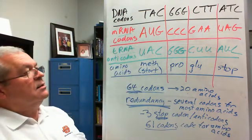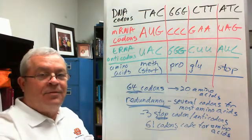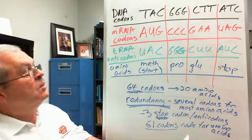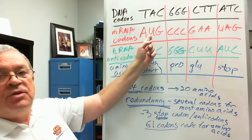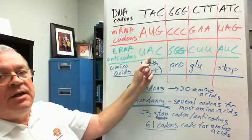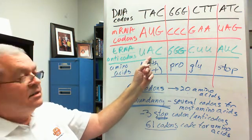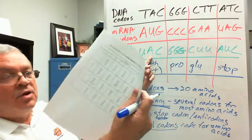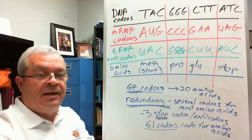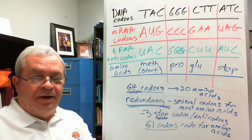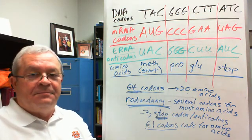All right. So that is our first genetic code problem. It started with what? A DNA codon. You have to find the corresponding messenger RNA codon. Then the tRNA anticodon. And then go to this chart with the tRNA anticodon to find the corresponding amino acid. That's it folks. All right. Very good. Thank you.